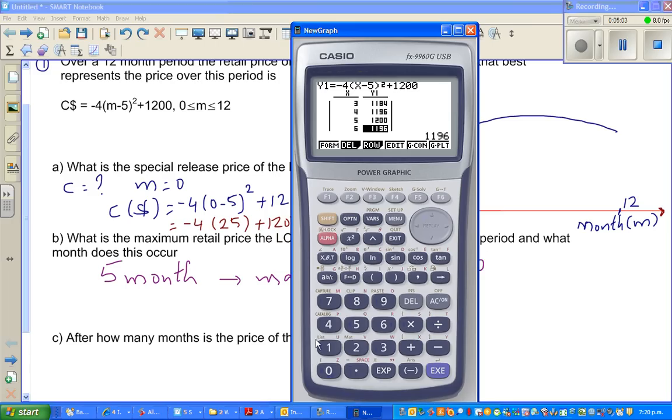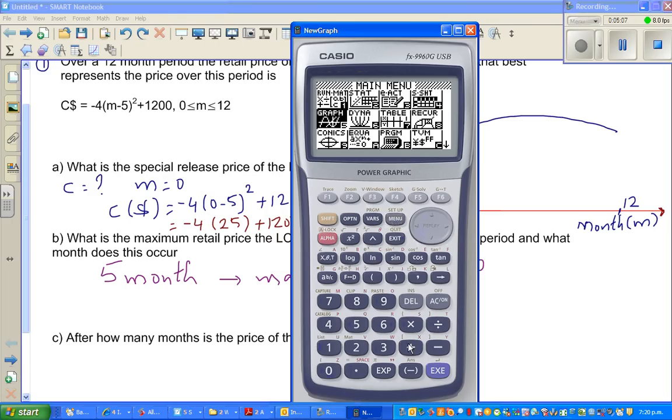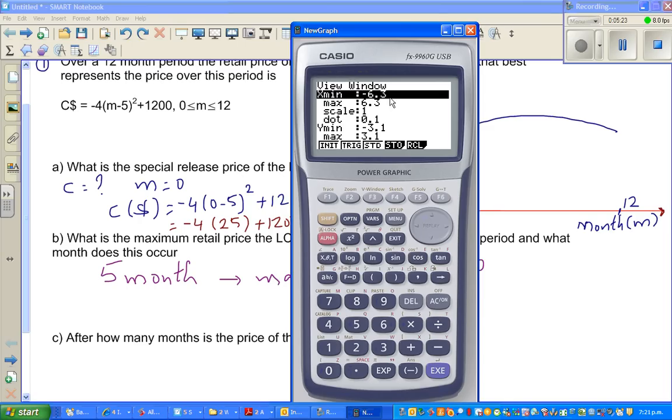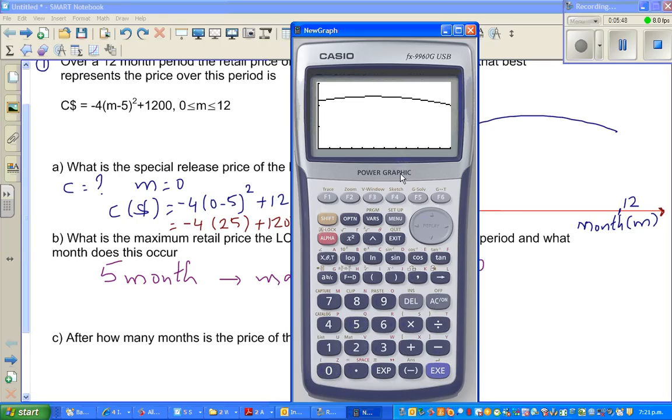I'll show this graphically. Go to graph and change the scale using shift F3 for the view window. Set x from 0 to 12 with scale of 1, and y from 0 to 1500 with scale of 500. You can find the answer in the graph menu by going g-solve. Press F2 for maximum. In the 5th month you got 1200.